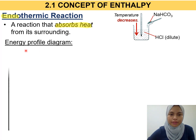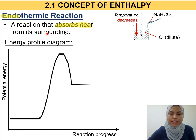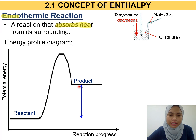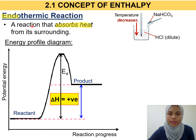For the energy profile diagram of an endothermic reaction, the y-axis is potential energy and the x-axis is reaction progress. The curve shows that the potential energy of the reactant is less than that of the product. To measure the enthalpy change, it equals total enthalpy of product minus reactant. Since the product's total enthalpy is higher than the reactant's, the enthalpy change for an endothermic reaction is positive.